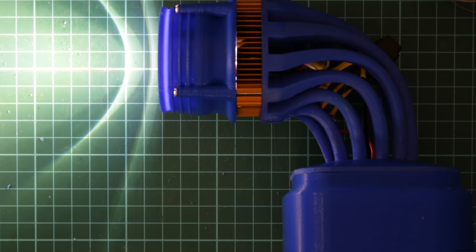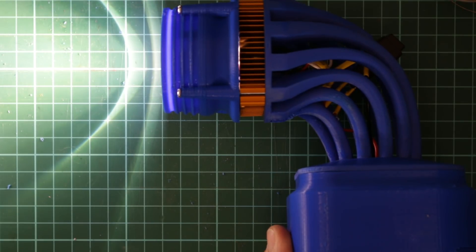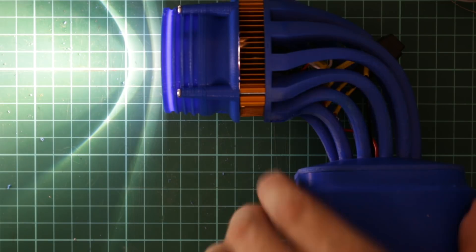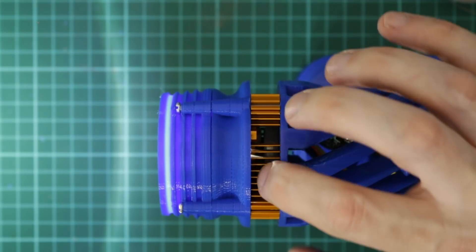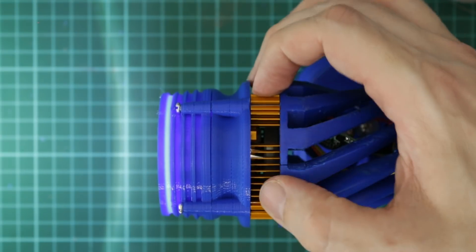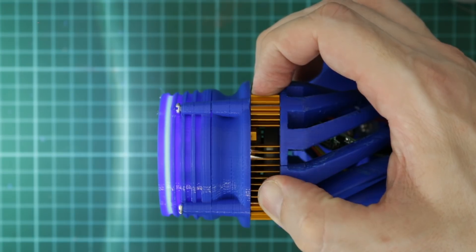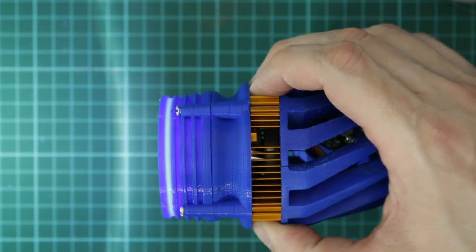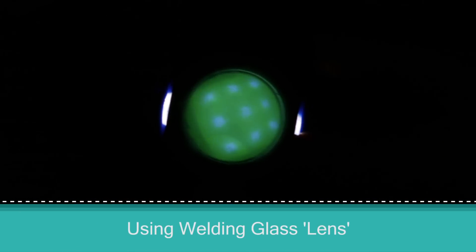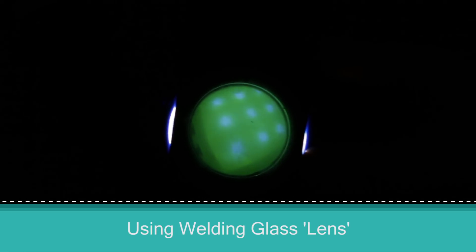So hopefully with the fan in there it won't overheat the heat sink. If it does then the PLA plastic here will begin to melt or deform. Okay so if I turn down the exposure level you can see the nine chips inside the LED.